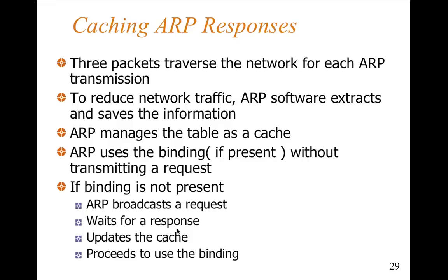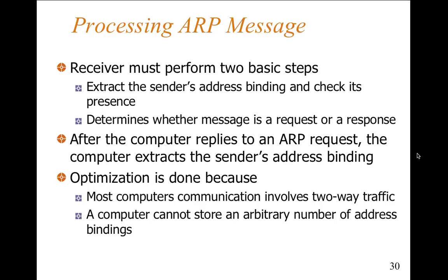In terms of caching responses, there are three packet traversals across the network for an ARP transmission. To reduce traffic, the computer might extract and save the information — cache it locally so we don't have to keep reloading it. The ARP table manages itself as a cache. If the binding is present, no transmission or request is needed. If the binding is not present, it broadcasts a request, waits for a response, updates the cache, and proceeds to use the binding once created. When processing an ARP message, the receiver must extract the sender's address binding and check its presence, then determine whether the message is a request or response and deal with it appropriately. Most computer communication involves two-way traffic, and a computer cannot store an arbitrary number of address bindings.